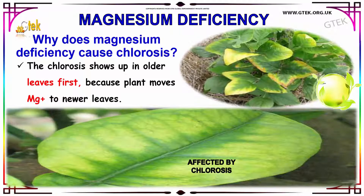Because the plant moves magnesium to newer leaves. You can see these leaves affected by chlorosis — they are becoming a slightly yellowish color. You can see it over here. This is called magnesium deficiency.